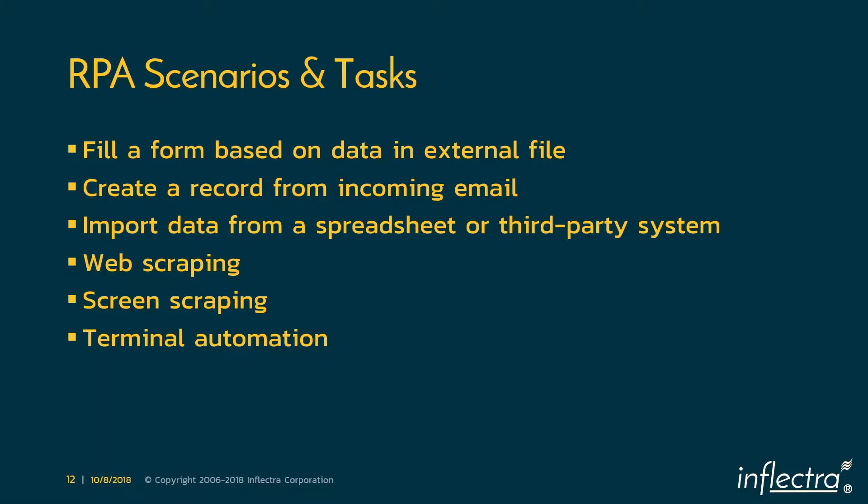There are many different tasks you can conduct with robotic process automation. For example, you could take a form and an external file of data and load that form — whether it's a web form or a desktop application form. A common example: you've gone to a conference and have a CSV file containing a list of all attendees that you need to load into your CRM system. You read through that file, load in the data, and it's in your CRM system.